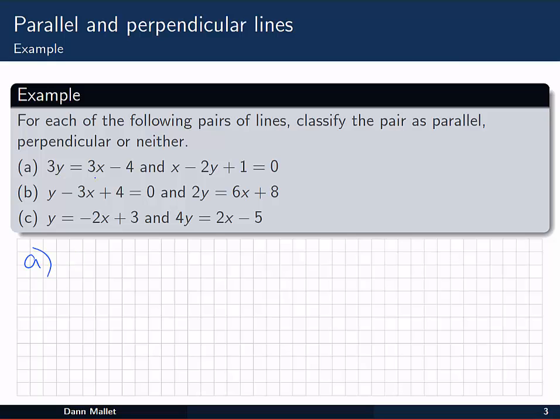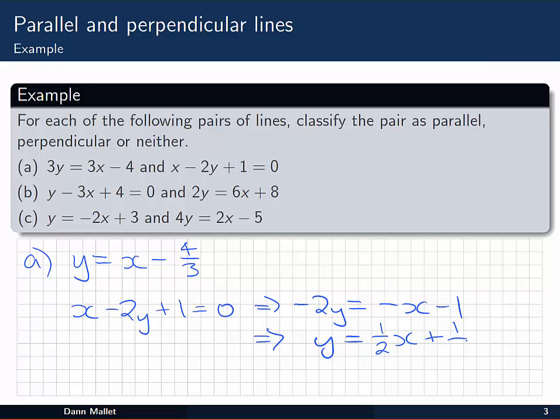When we have 3y equals 3x minus 4, we can divide both sides by 3 and get y equals x minus 4 on 3. On the other hand, the second equation, x minus 2y plus 1 equals 0 becomes minus 2y equals minus x minus 1. And finally, y equals 1 on 2x plus 1 on 2.